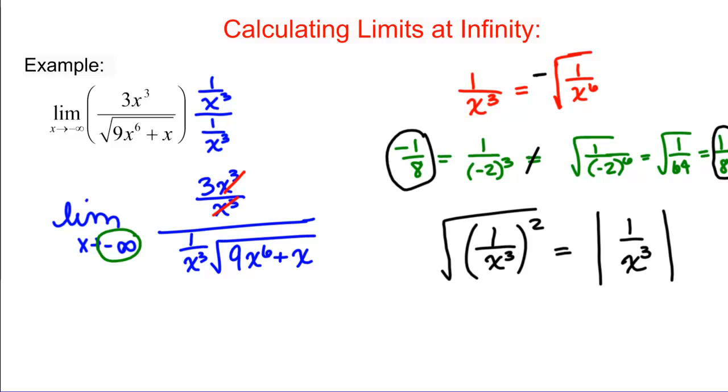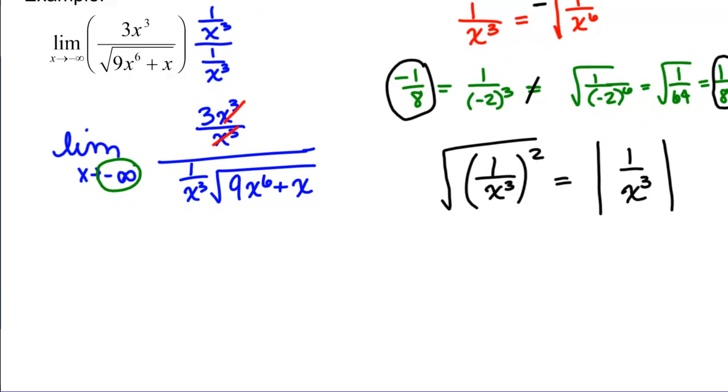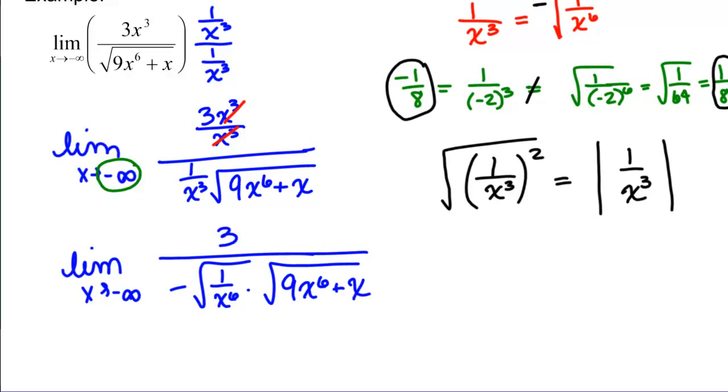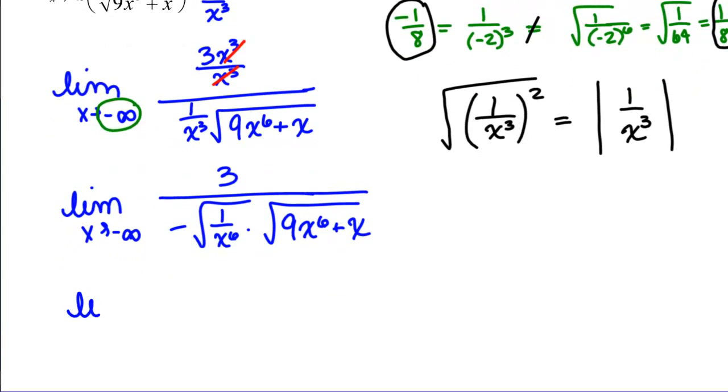So we are going to rewrite our expression now as the limit as X goes to negative infinity, 3 over negative the square root of 1 over X to the 6th times the square root of 9X to the 6th plus X. Now we're going to do the same thing as before. We're going to combine the square roots. Limit as X goes to negative infinity of 3 over negative the large square root 9X to the 6th divided by X to the 6th plus X over X to the 6th.